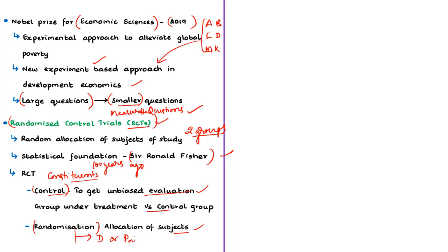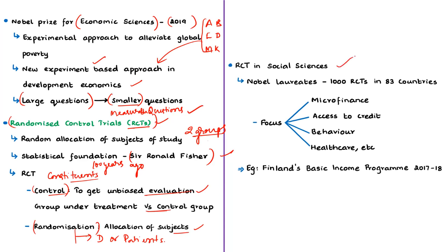The article also discusses the application of RCTs in social sciences. Social sciences have slowly converted from non-experimental to experimental methods of understanding. The randomistas took control of development economics since the mid-1990s. This year's Nobel laureates have done about 1,000 RCTs in about 83 countries, including India.